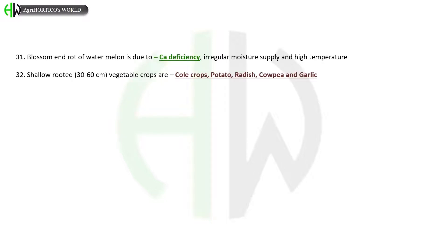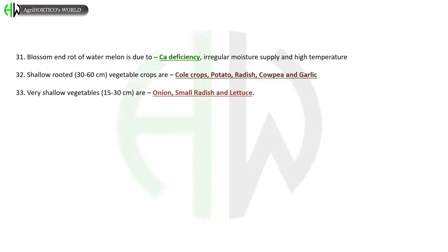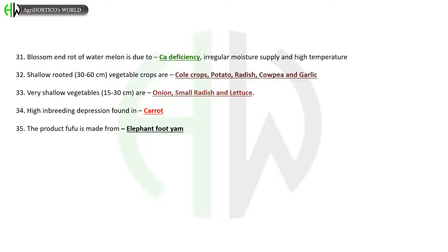Shallow rooted vegetables (30–60 cm) are cole crops, potato, radish, cowpea, and garlic. Very shallow vegetables (15–30 cm) are onion, small radish, and lettuce. High inbreeding depression is found in carrot. The product fufu is made from elephant foot yam. The edible part of Jerusalem artichoke is tuber. Edible part of kohlrabi is swollen stem above the cotyledons. High productivity vegetable crop in India is cassava.